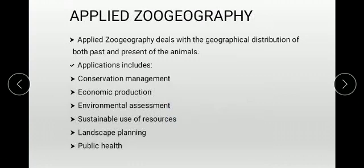Conservation management means conserving animals from extinction and protecting them. Economic production addresses which animals benefit or are harmful to a country's economy. Environmental assessment and sustainable use of resources are also key aims. Landscape planning means providing an area in which animals can live freely and roam about for their survival. Public health is also one of the applications of applied zoo geography.